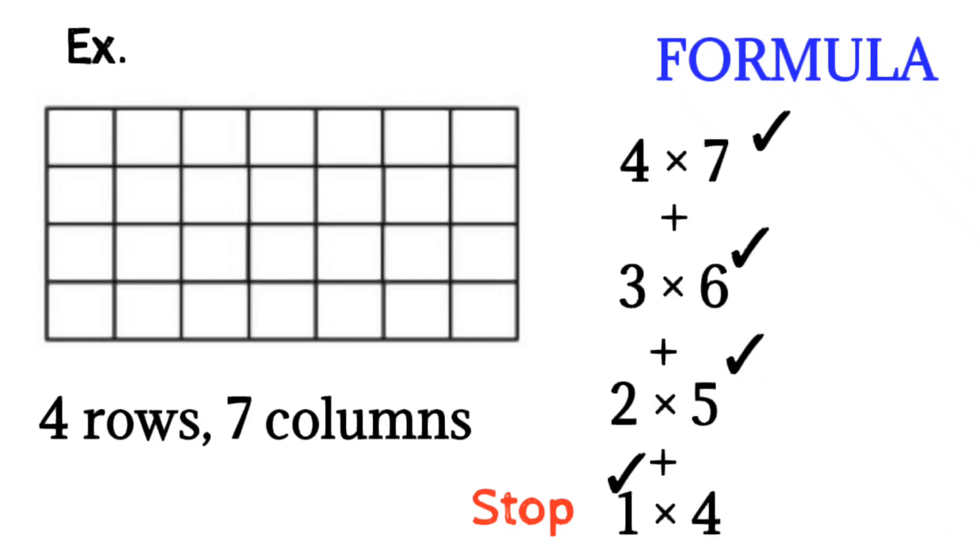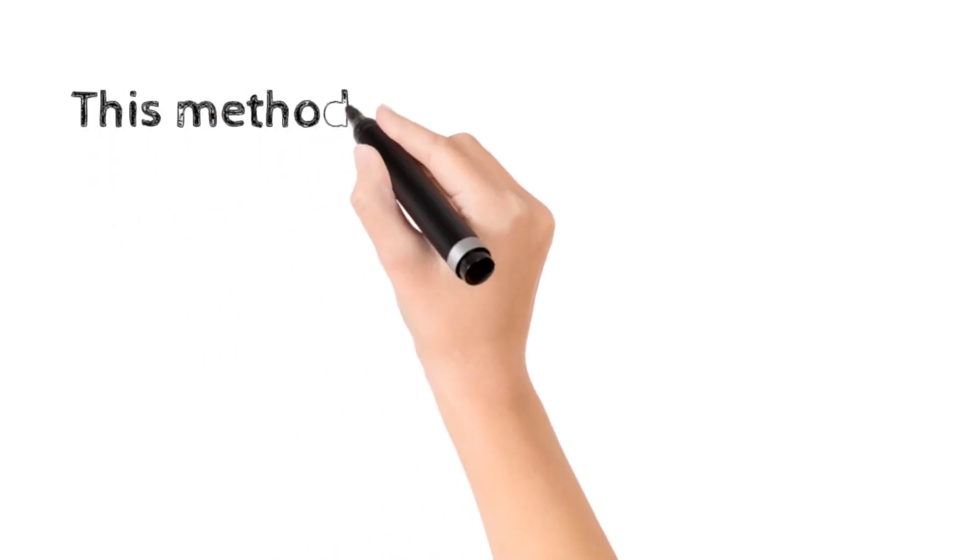Now 4 into 7 is 28, 3 into 6 is 18, 2 into 5 is 10, and 1 into 4 is 4. So if I add all these, then I get 60 as a result. Now there are 60 squares in this figure. So in this way, this method is used for any diagrams.